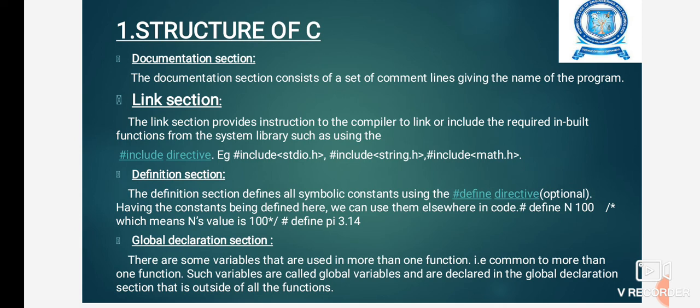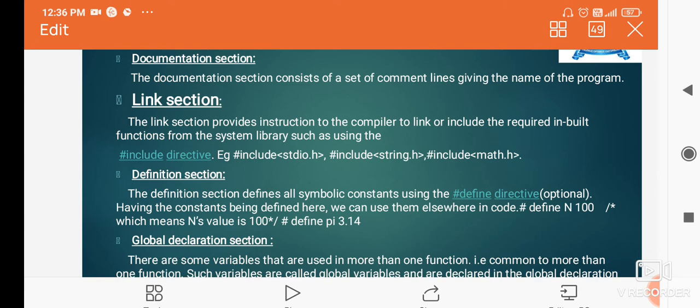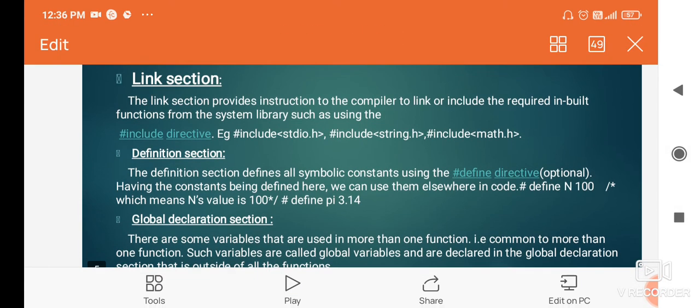Examples include hash include directives like hash include stdio.h. Then, definition section defines all the symbolic constants using hash defined directives. For example, the constant value pi equals 3.14.